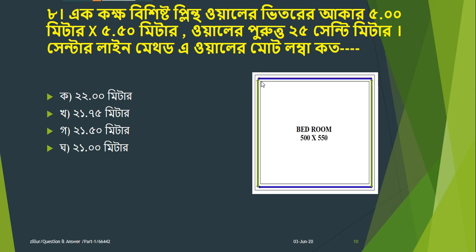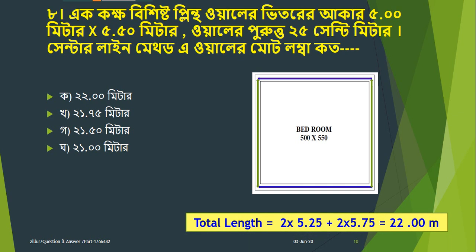5.5 is here. I'm going to show you how. A center to get a goto, a center. The total length: 5.25 meter into 5.75 meter, 5.25 meter into 5.75 meter. The total length of the wall is 5.25 meters. 5.25 into 2 meter plus 5.75 into 2 meter gives 22 meters. That is the answer for the 22 meter.